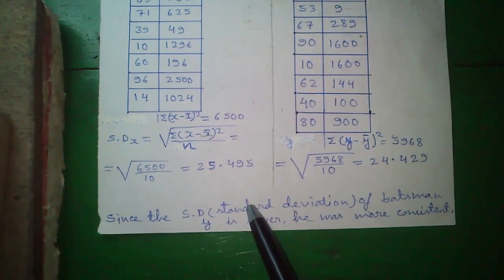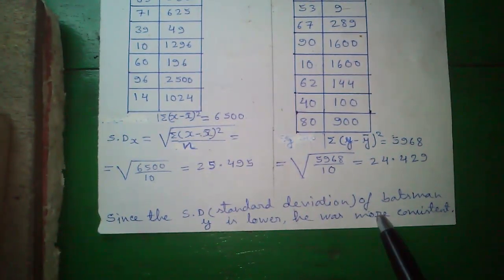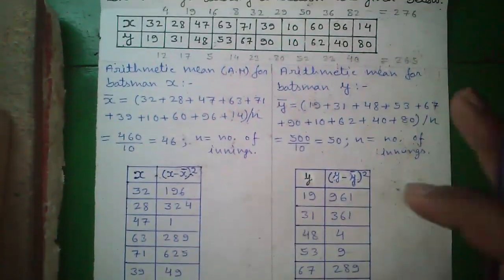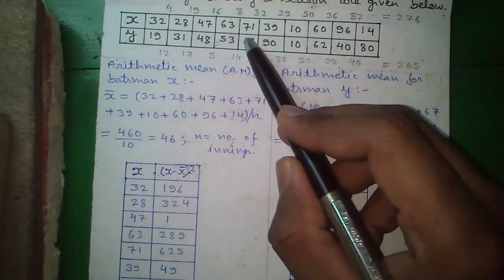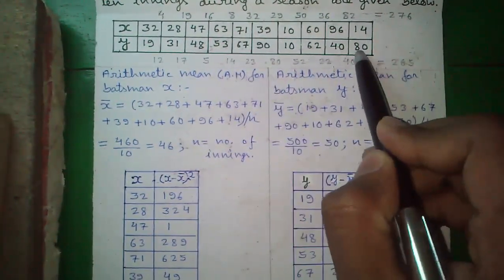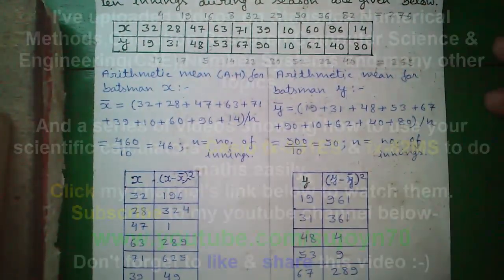So, our answer is since the SD or standard deviation of batsman Y is lower, he was more consistent in scoring. How can we say that? The meaning of standard deviation is that he was deviating from his central value. The lower the standard deviation, the less the deviation and you can say less the deviation, he was more consistent. That is the meaning of standard deviation. So, friends this was the tutorial.